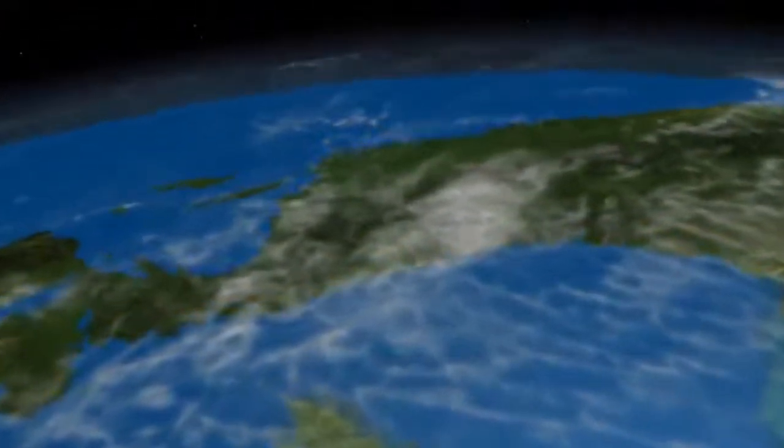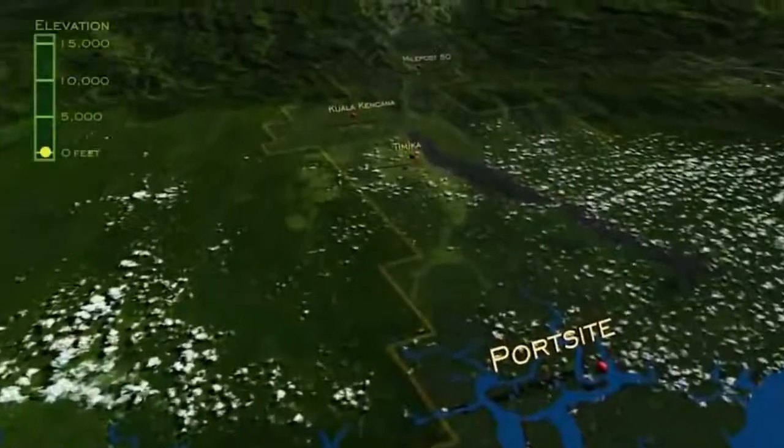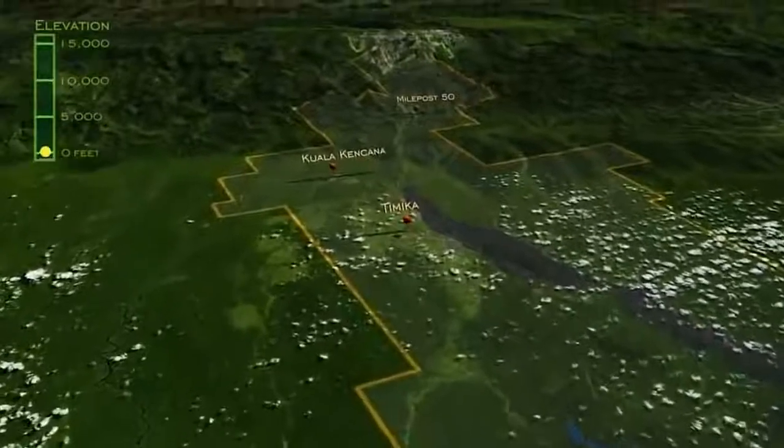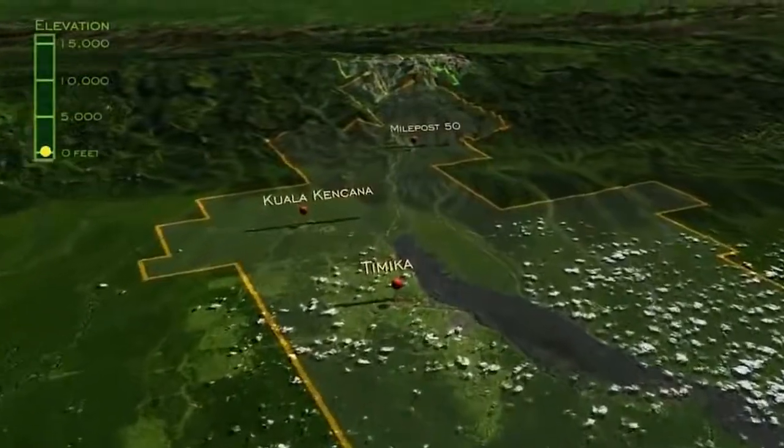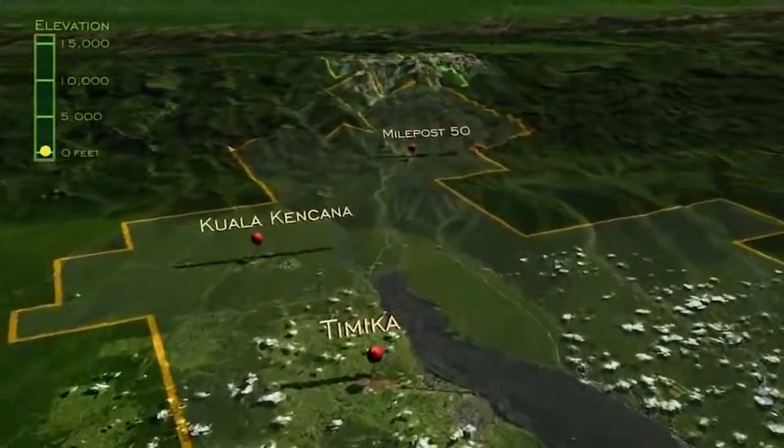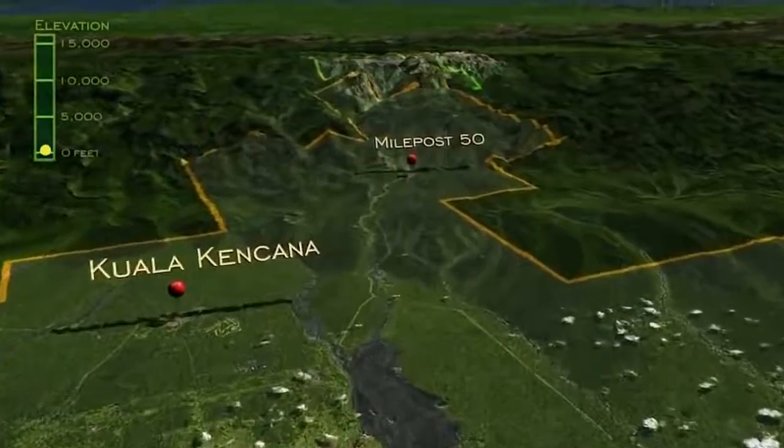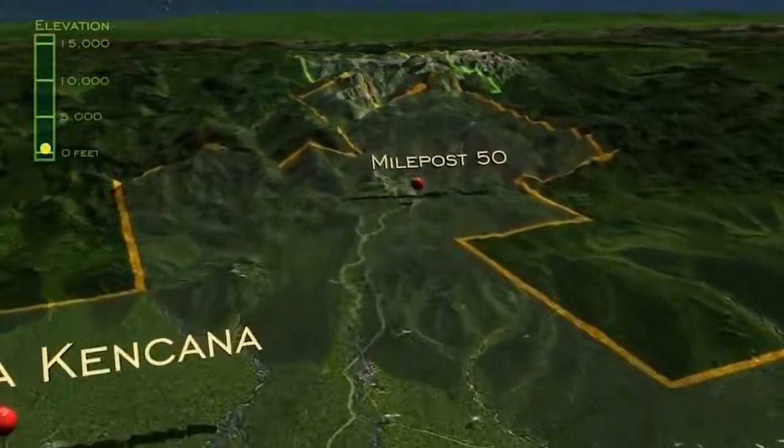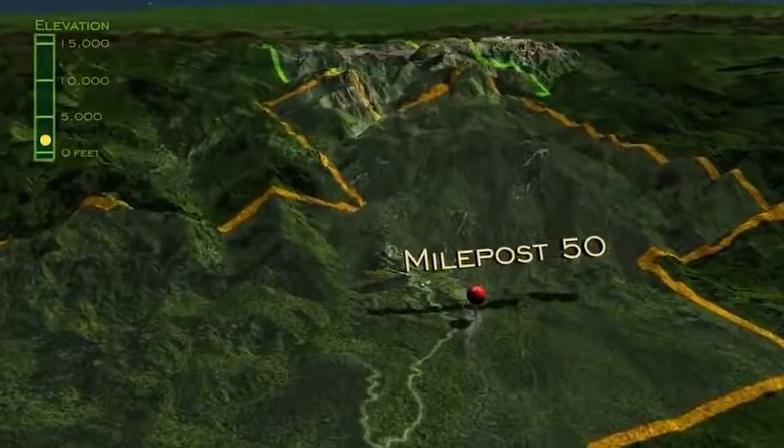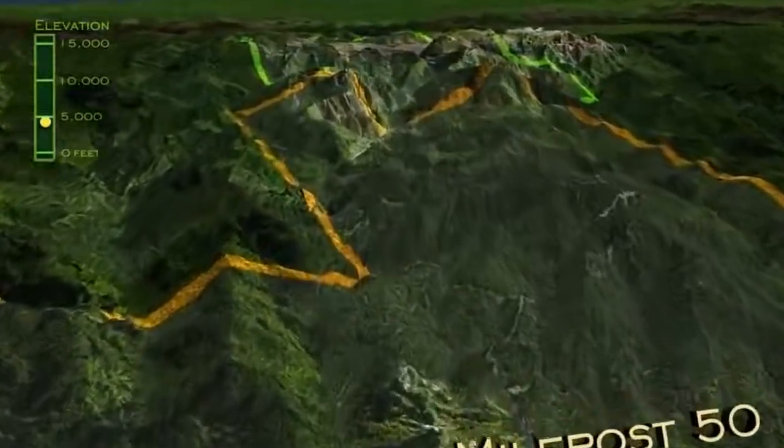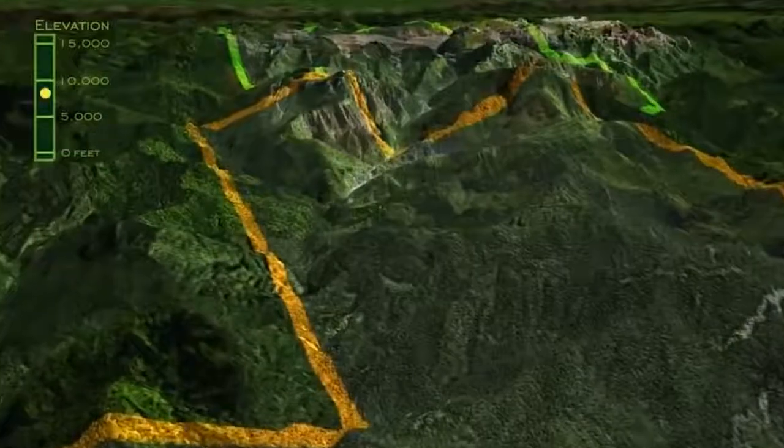Along the southern portion of the Indonesian province of Papua, we operate one of the largest mining operations on the globe. This is a bird's eye view of what we call our project area, as we move from sea level at the port of Amamapare, through the lowlands portion of the project area, the local city of Tameka, Freeport's Lowlands Community Kuala Kanchana, a logistics transfer point at milepost 50, and into the highlands.